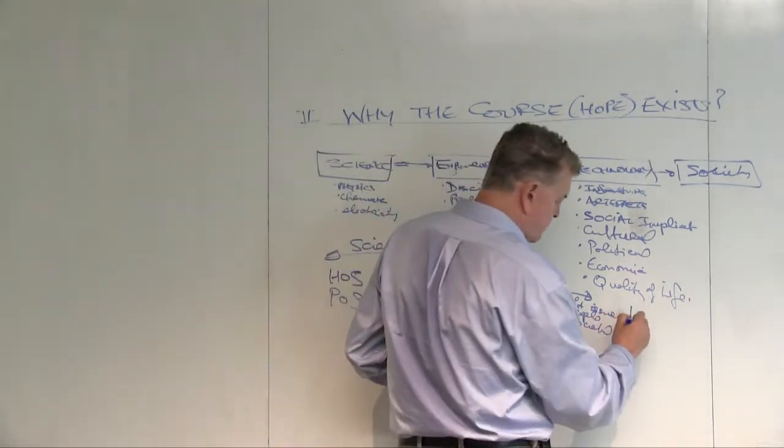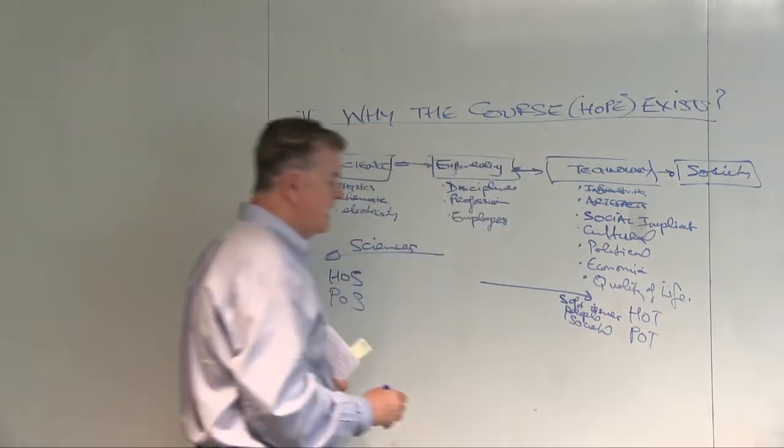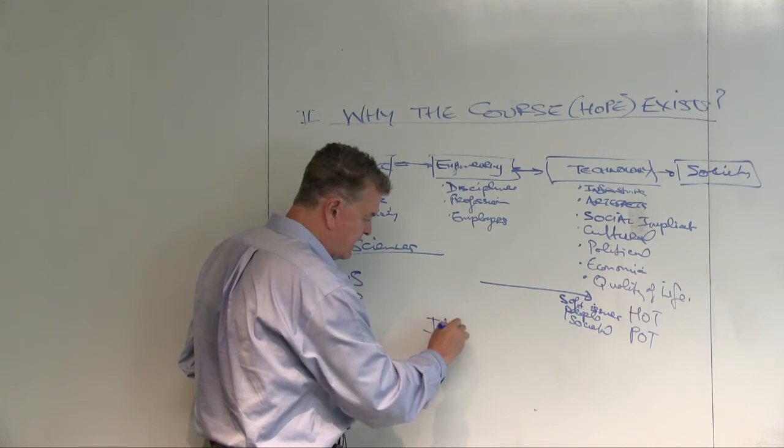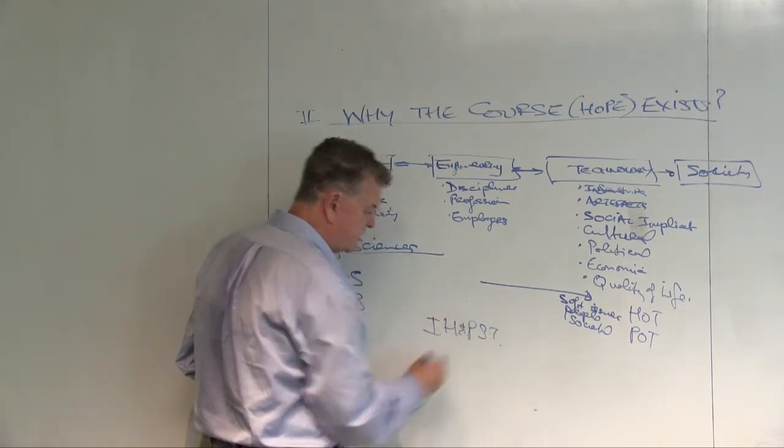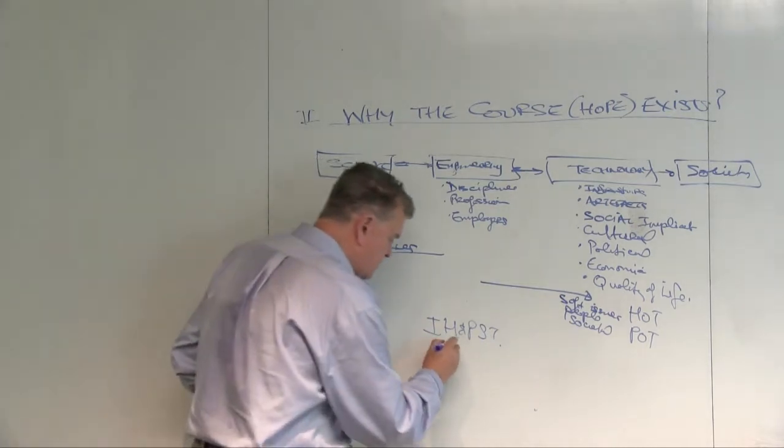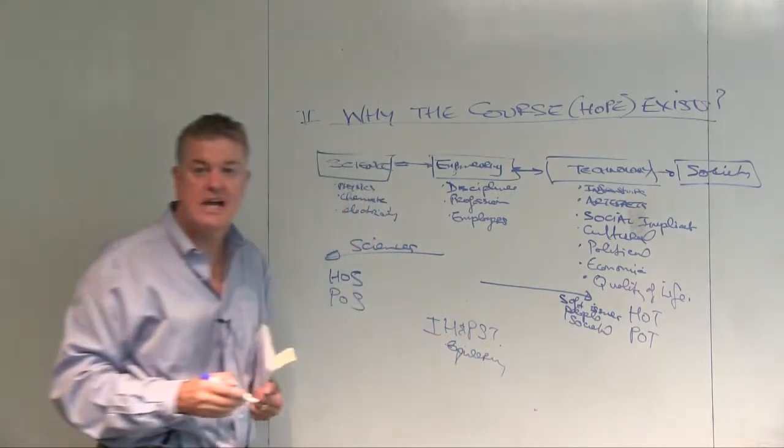All have courses in their humanities departments on the history of science and the philosophy of science. The other big area, of course, is the history of technology and the philosophy of technology. And many of these institutes are called the Institutes for the History and Philosophy of Science and Technology. And engineering is perceived as a subset of history and philosophy of science and technology.